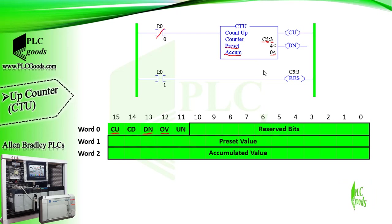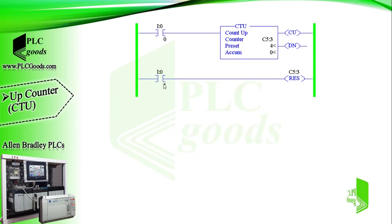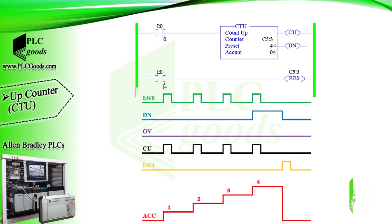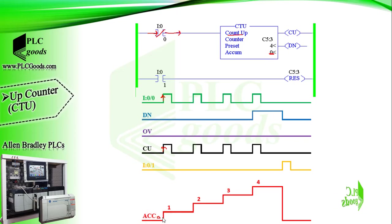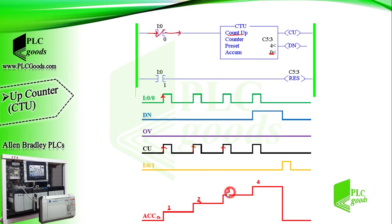With the reset instruction, the accumulated value of each counter can be reset to 0. Let's explain how this counter works based on this diagram. According to the program, activating the first input causes a positive edge signal to the counter, which causes the counter up bit to be on. This positive edge signal increases the accumulated value 1 unit. Similarly, with the next positive edge signals, the accumulated value will be increased until it reaches the preset value, which here is 4.